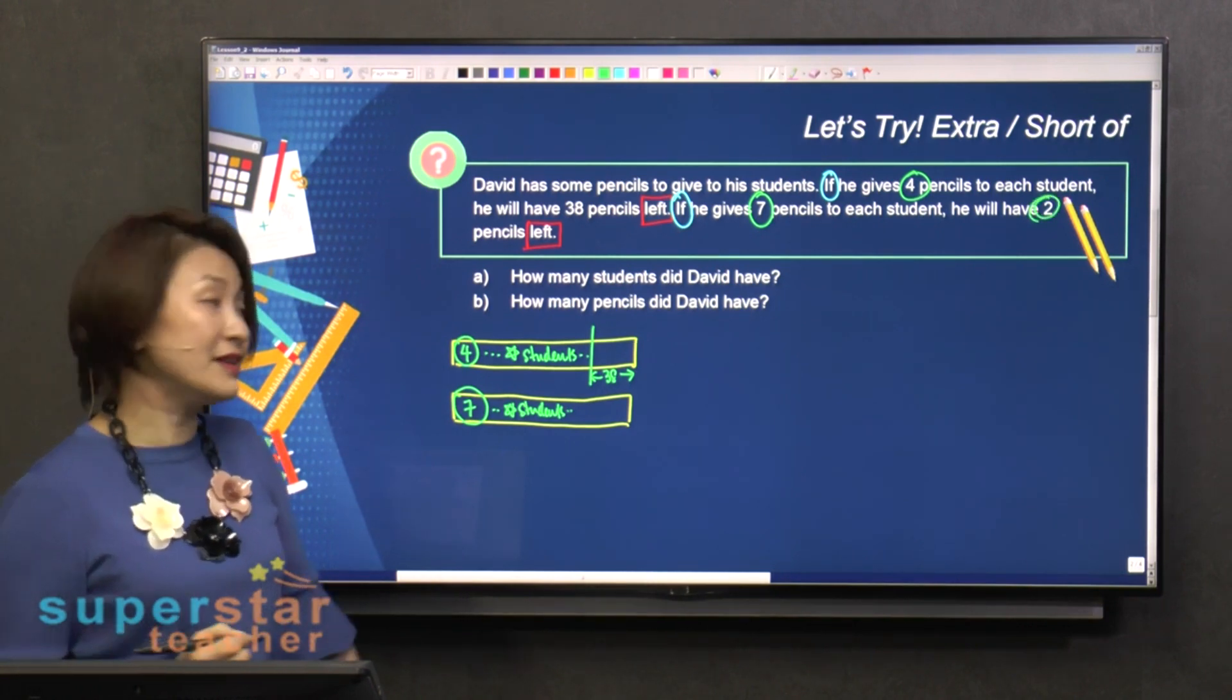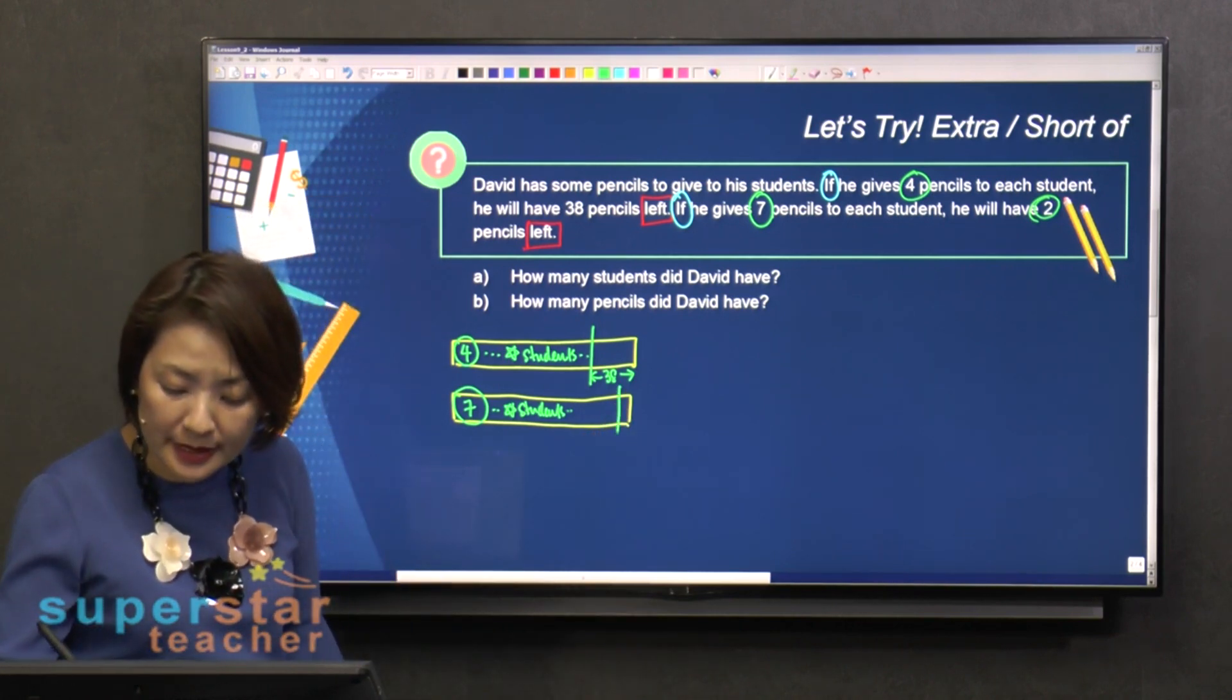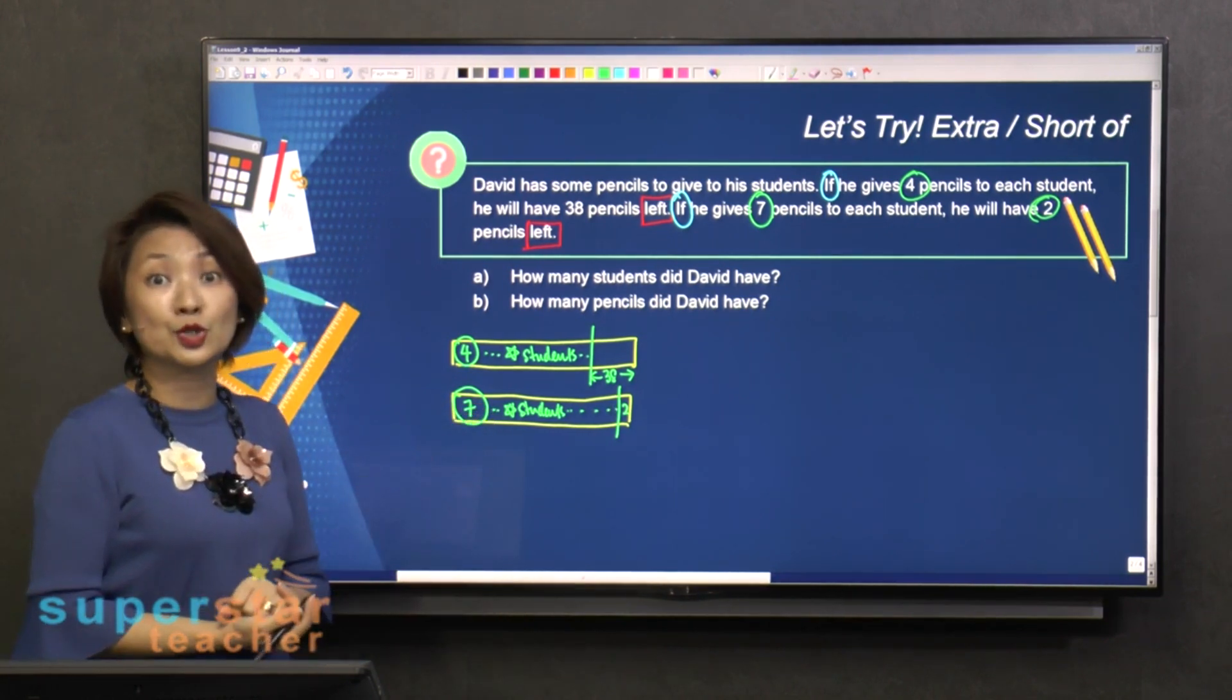He will have two left. Two left. Left means he didn't finish using all of his pencils. So two could be here. So you dot all the way here. Once you have this, then what do you do?